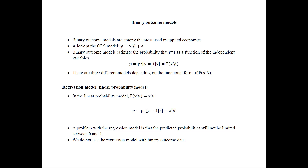We have three different types of models depending on the functional form of x prime beta. The first is the linear probability model, where f of x prime beta equals x prime beta — a linear function. One of the biggest problems with this model is that the predicted probability would not be limited between 0 and 1, so you could have a predicted probability less than 0 or greater than 1, which makes no sense. We are not going to use this linear regression model when we have binary outcome models.